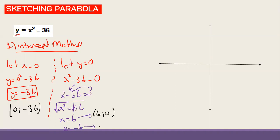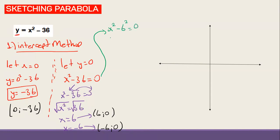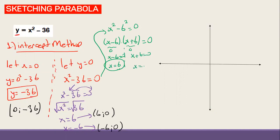Alternatively, you can factor: x² - 36 = (x - 6)(x + 6) = 0. Set each factor to zero: x - 6 = 0 gives x = 6, and x + 6 = 0 gives x = -6. Either way you get the same two points. So now I have three points total.